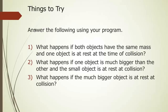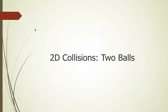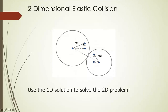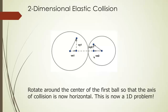For the two-dimensional version, we have two balls going in different directions. V1 is the velocity of the first, v2 is the velocity of the second — different directions and different magnitudes. It turns out we can use the one-dimensional version to solve this. The idea is simple: you take this problem, rotate it so that the collision axis is horizontal, and it becomes a one-dimensional problem. Once rotated, the vertical component of velocity doesn't contribute to the collision — only the horizontal component matters.